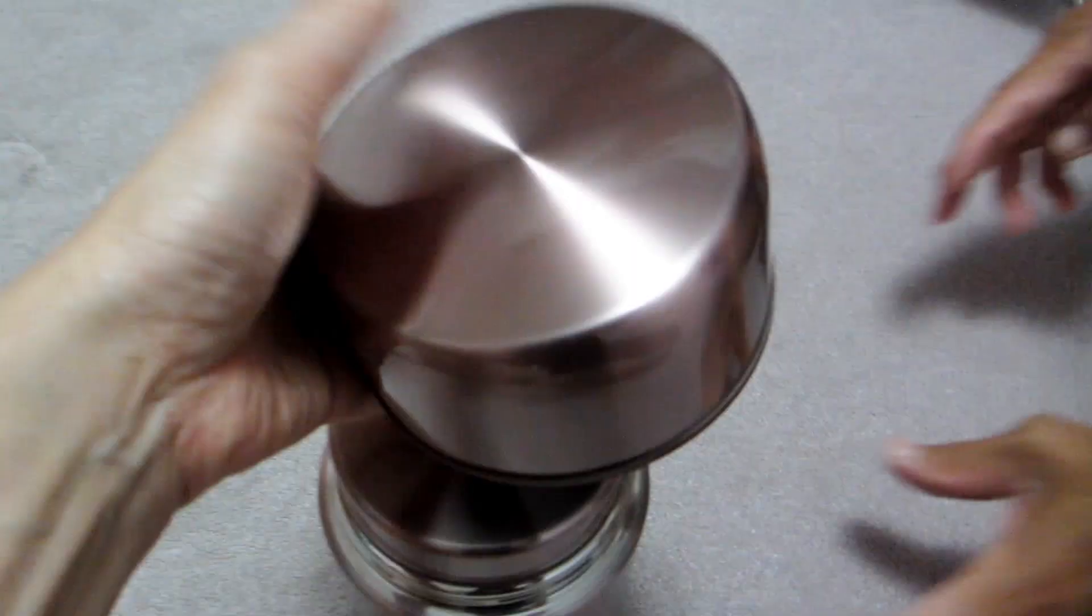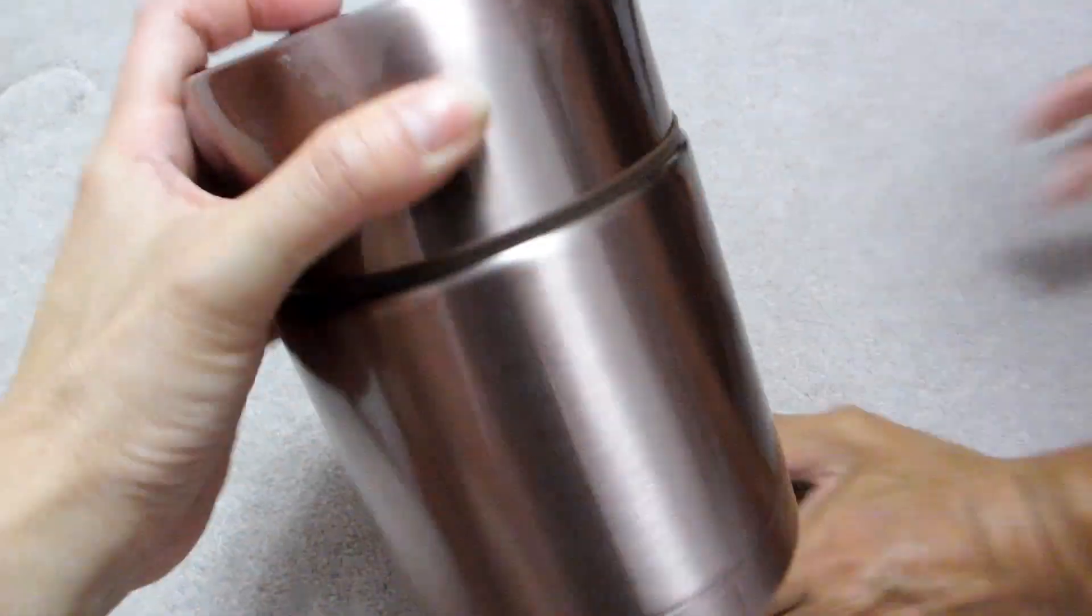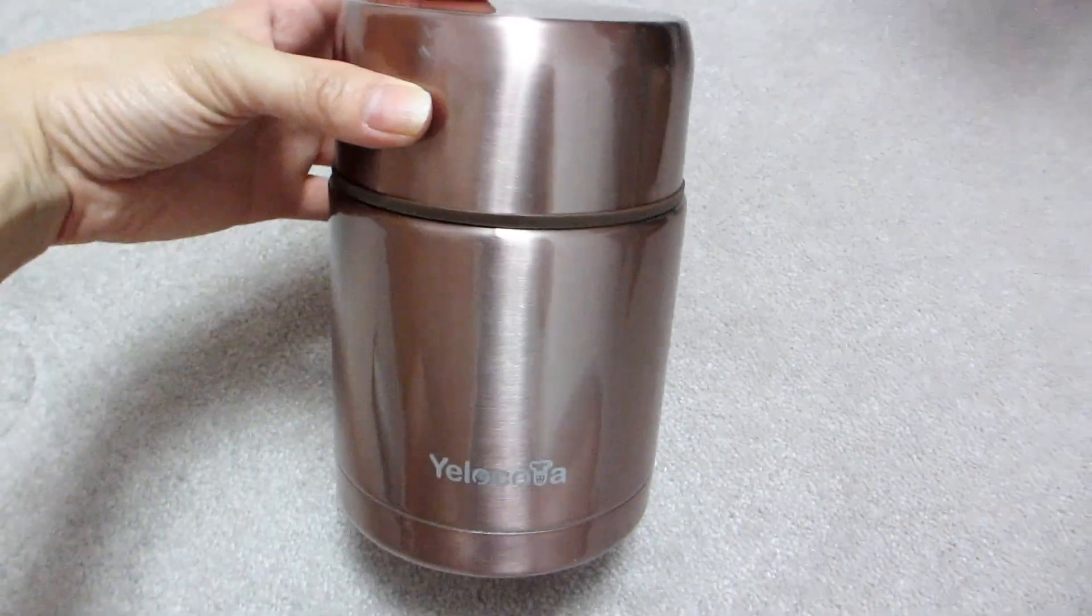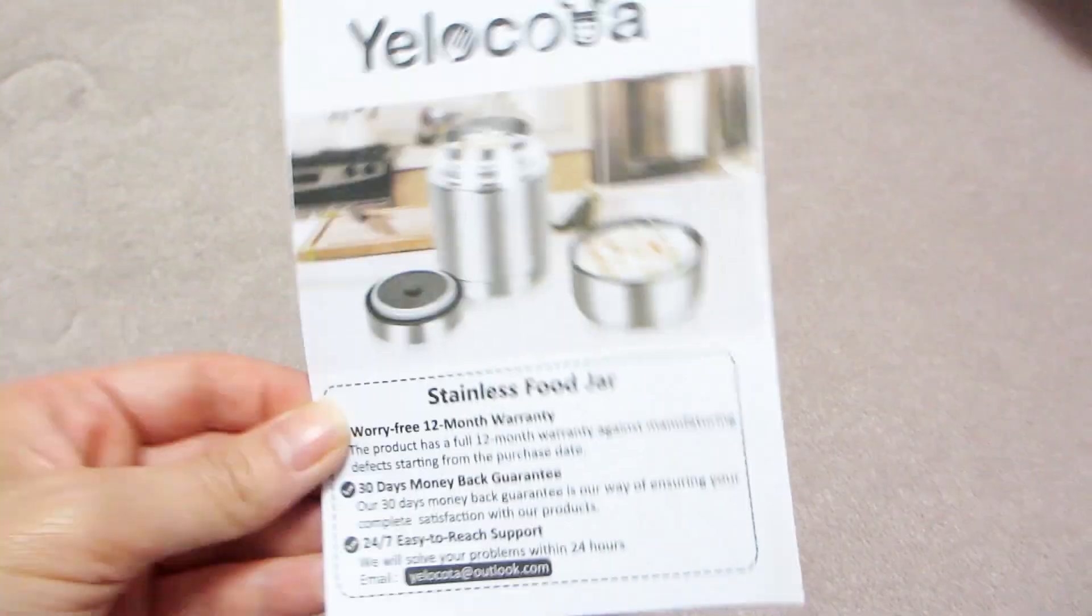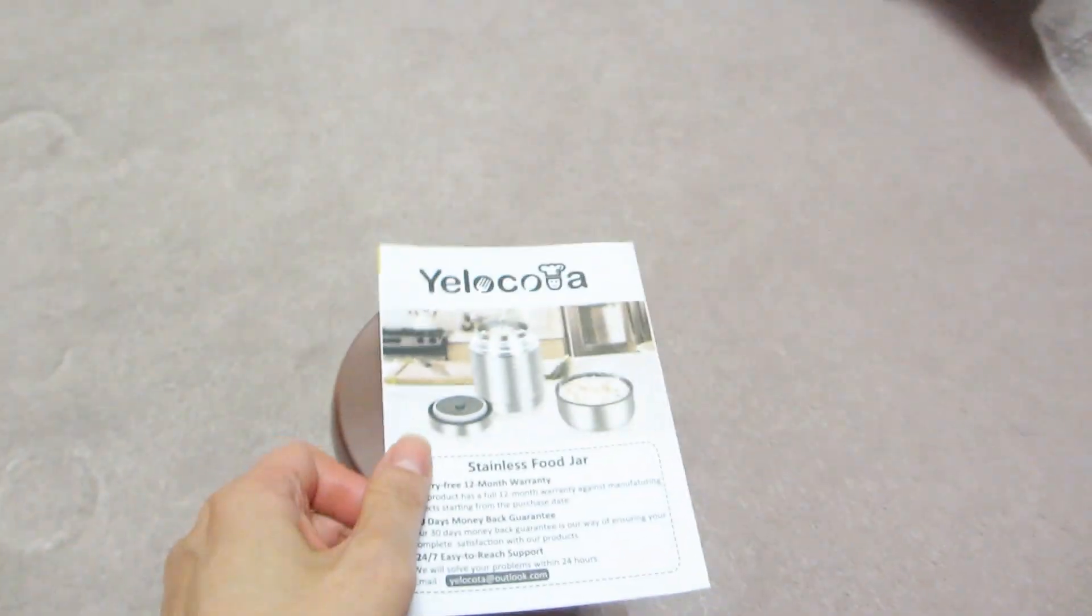And then of course you can use the other lid as a little bowl to eat from. Overall I think this food flask thermos is awesome and I can't wait to try it out. It even comes in different colors if you want to get multiples for each person in the family. And here's a little pamphlet it came with, and in the back there are some additional specifications about the flask.